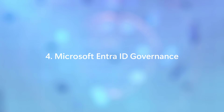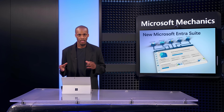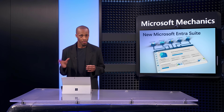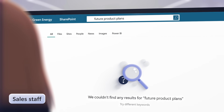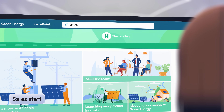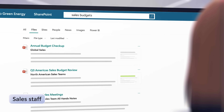ID Protection also works with hybrid identities when you integrate it with your on-premises Active Directory services. Our fourth capability, Microsoft Entra ID Governance, lets you balance security and productivity by ensuring that the right people have the right access to the right resources for the right amount of time. For example, for everyday users, you can ensure just enough access is granted so that users can only access what they need and nothing more to get their jobs done.